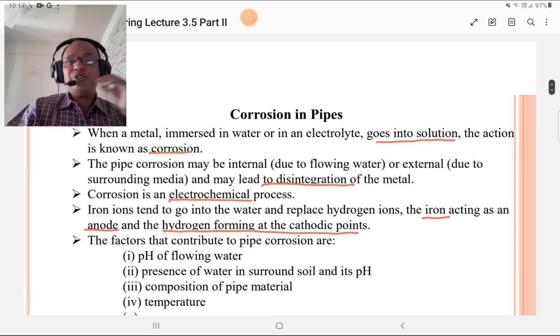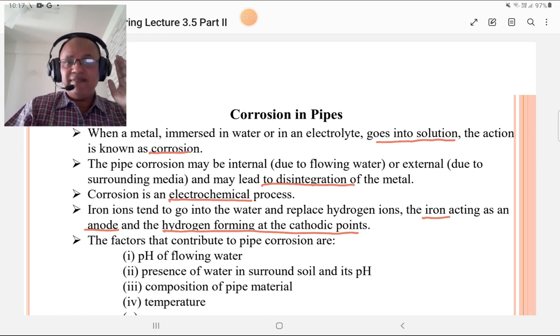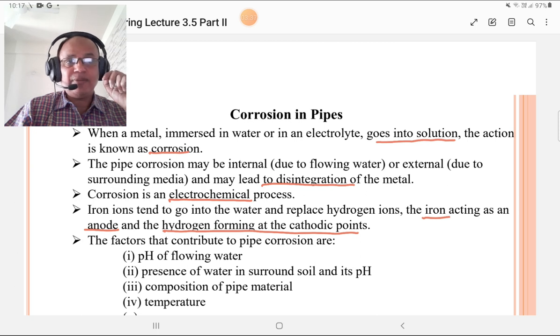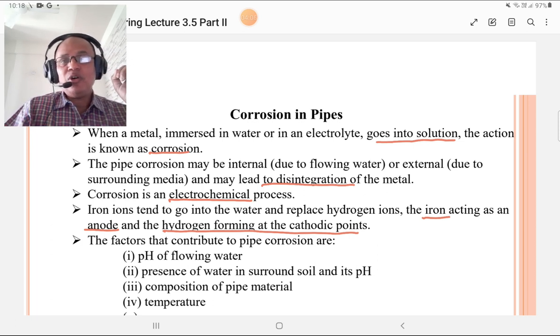Second point is corrosion in the pipes. This is a very common phenomenon. When a metal is immersed in water or in an electrolyte and goes into solution, the action is known as corrosion. The pipe corrosion may be internal due to flowing water or may be external due to surrounding media like soil, and may lead to disintegration of the metal. If you have seen in reinforcement, there is a brownish layer. That layer is nothing but corrosion.